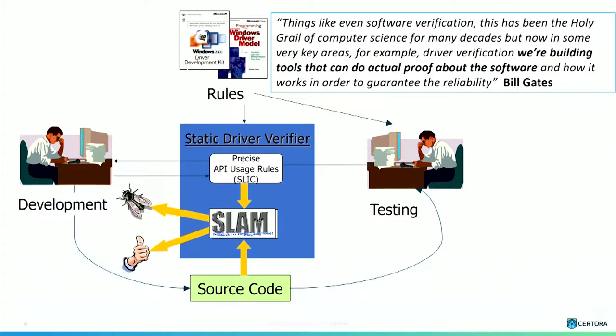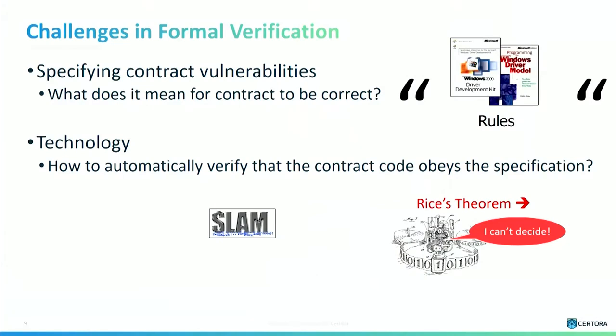What we are trying to do in this company is inspired by that for the blockchain. We are building automatic technology that can reason about your code, either prove properties or find bugs automatically. And in program verification, there are actually two challenges. One is the technological challenge, but the other — equally interesting — is the challenge of specification: how do you specify the right behavior?